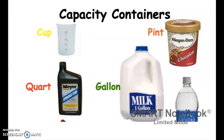Last but not least, here's just another form of different pictures you may or may not have seen yet for capacity containers. You can see the measuring cup, the pint of ice cream — those are the ones I get because it's just enough for just me — a quart of oil, which you'll learn more about when you're older and able to drive, and then the gallon of milk. That is it for today, so head back to Google Classroom and see what you need to do next.